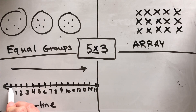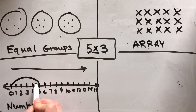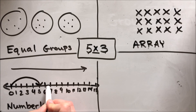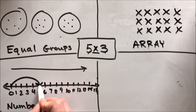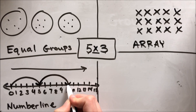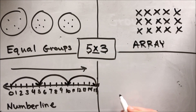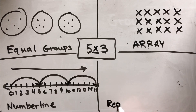I'm going to do three hops of five, just like I did with my equal groups picture. So I count one, two, three, four, five and draw my first hop with an arrow. Then one, two, three, four, five — because five times two gets me to ten. And when I do three groups of five, it gets me to fifteen.